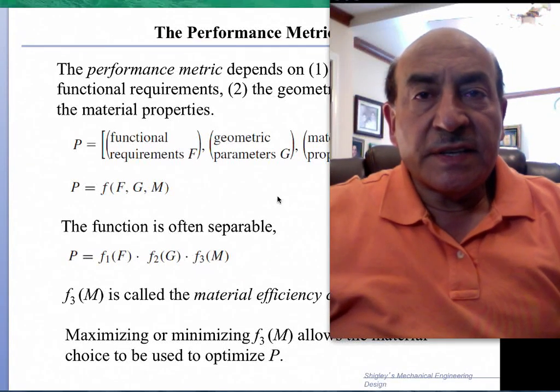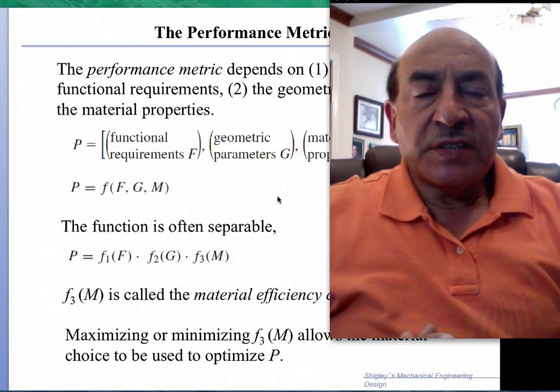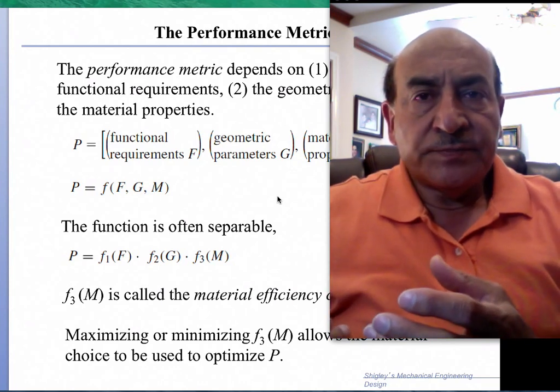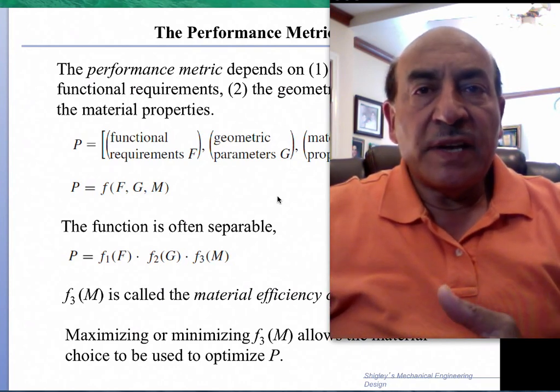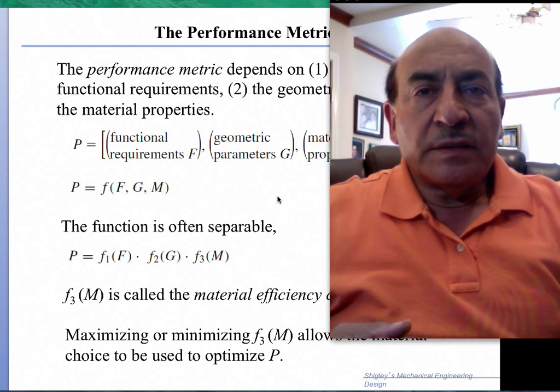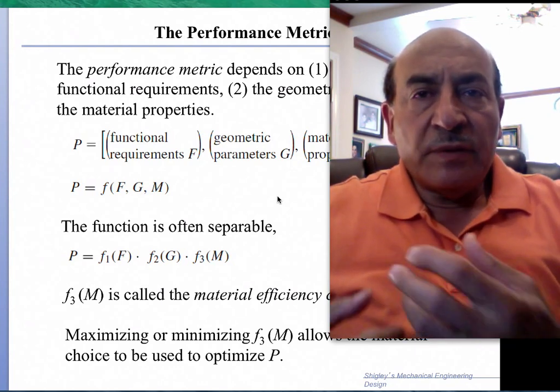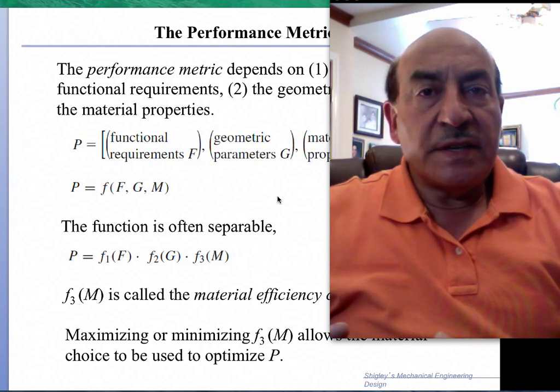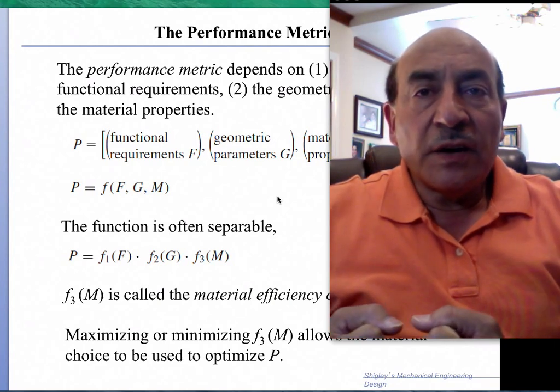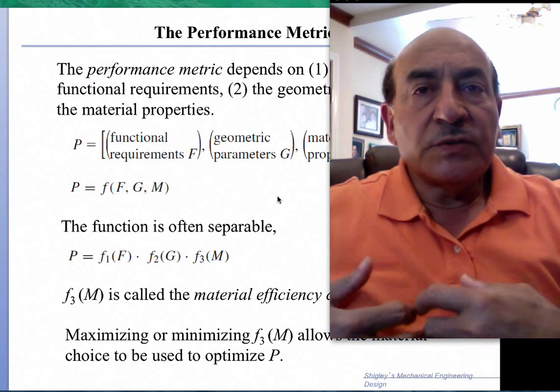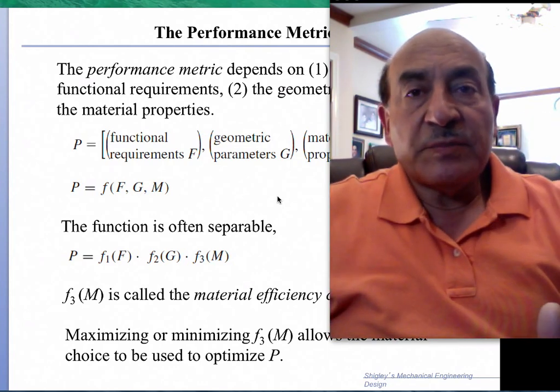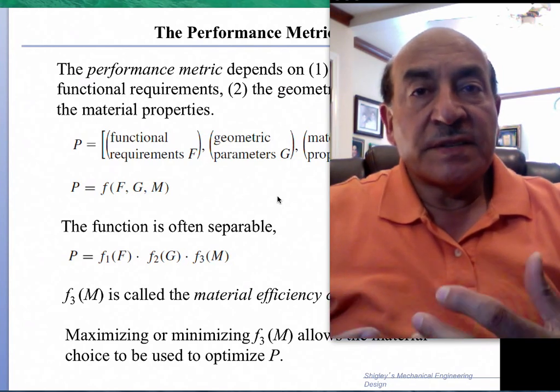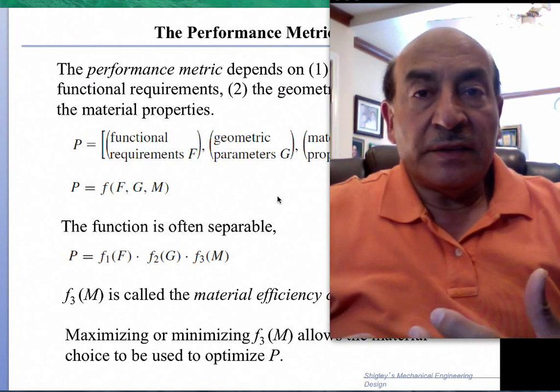Let's continue discussing material selection from the viewpoint of specific mechanical behavior. The two main properties that we look for in design are either the stiffness of the component to resist deformation or the strength so that it doesn't fail prematurely.